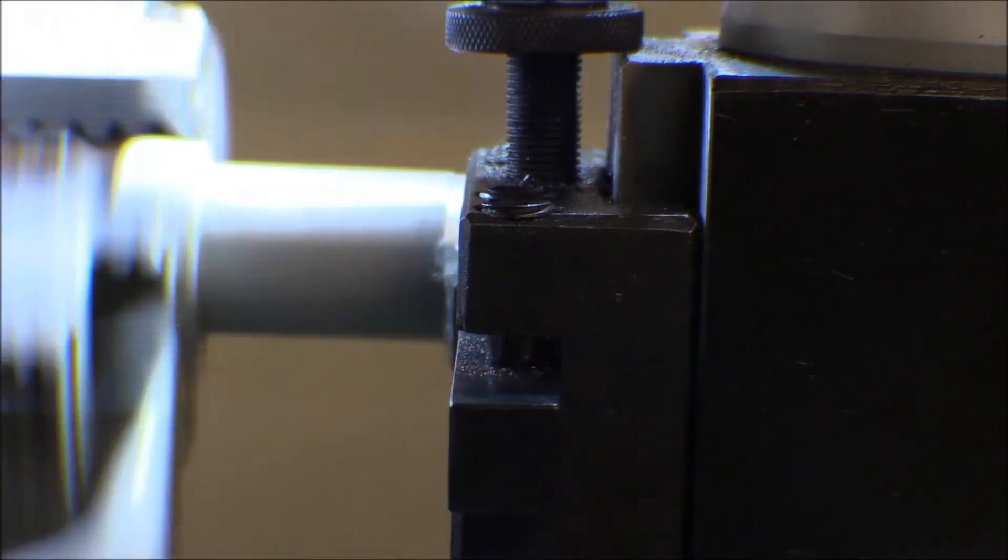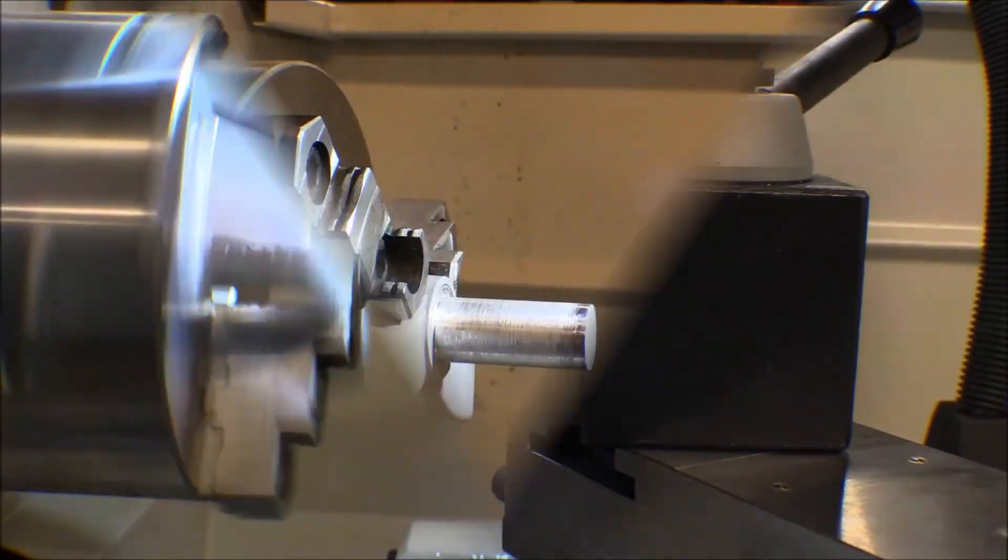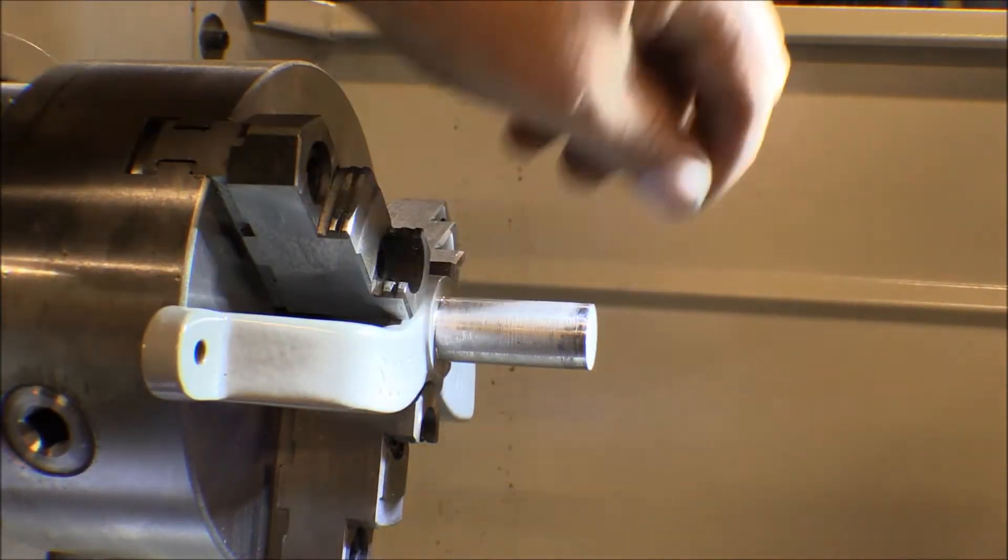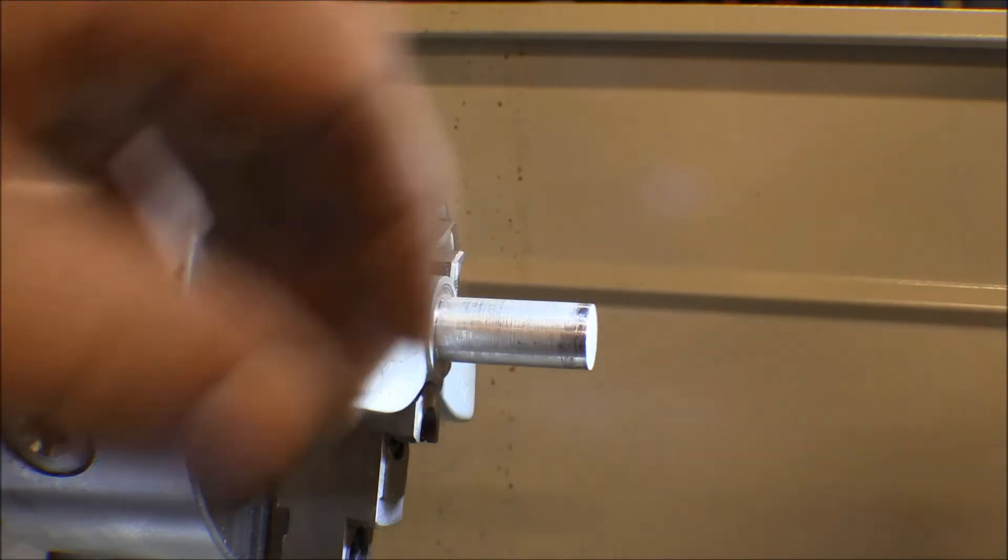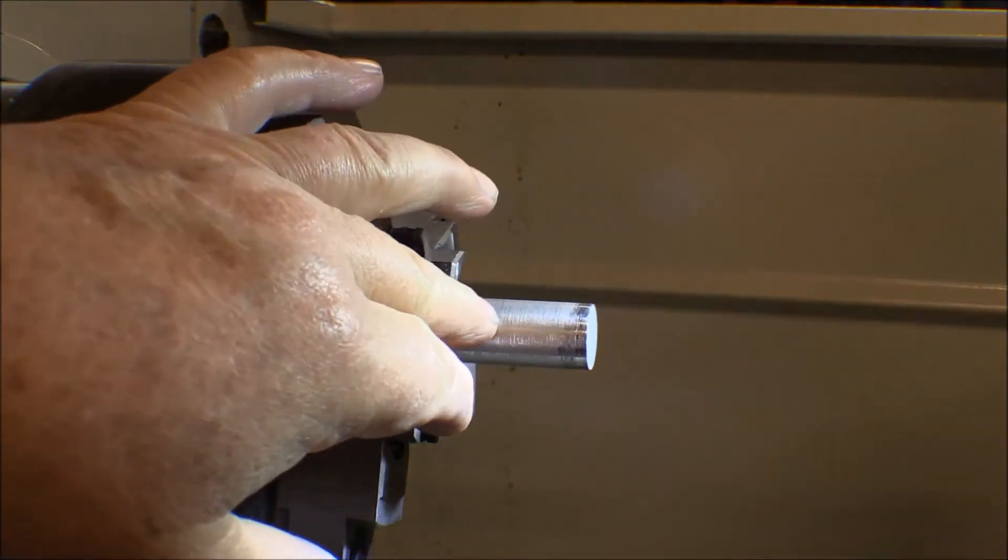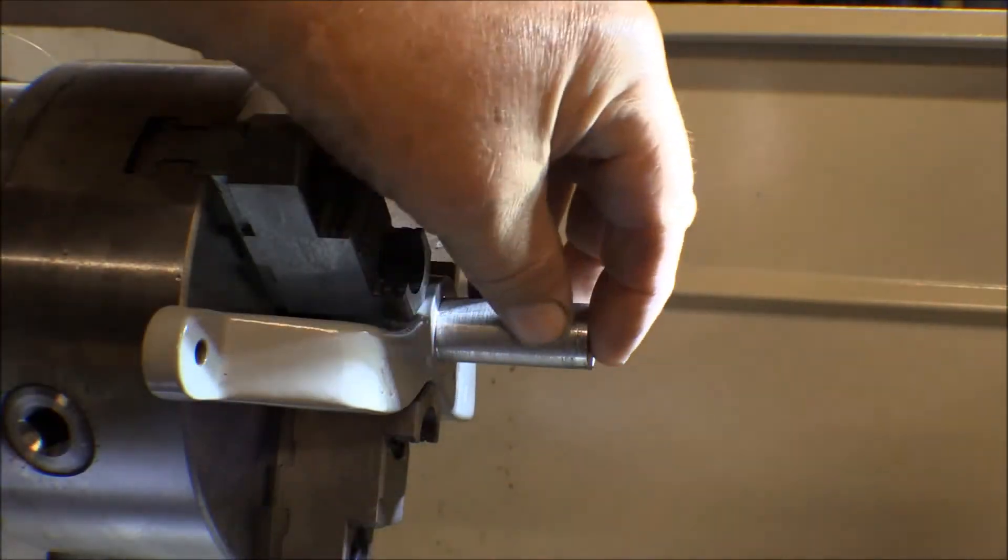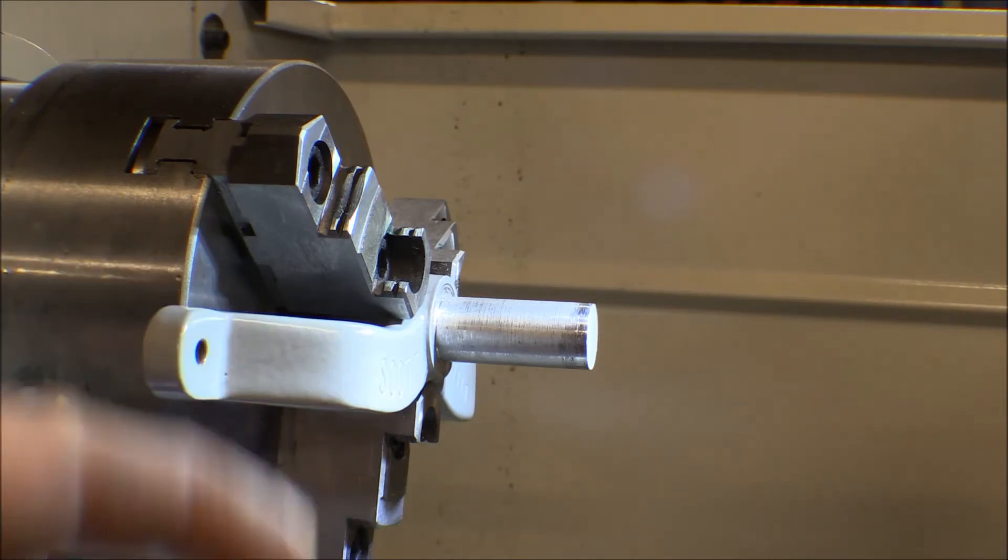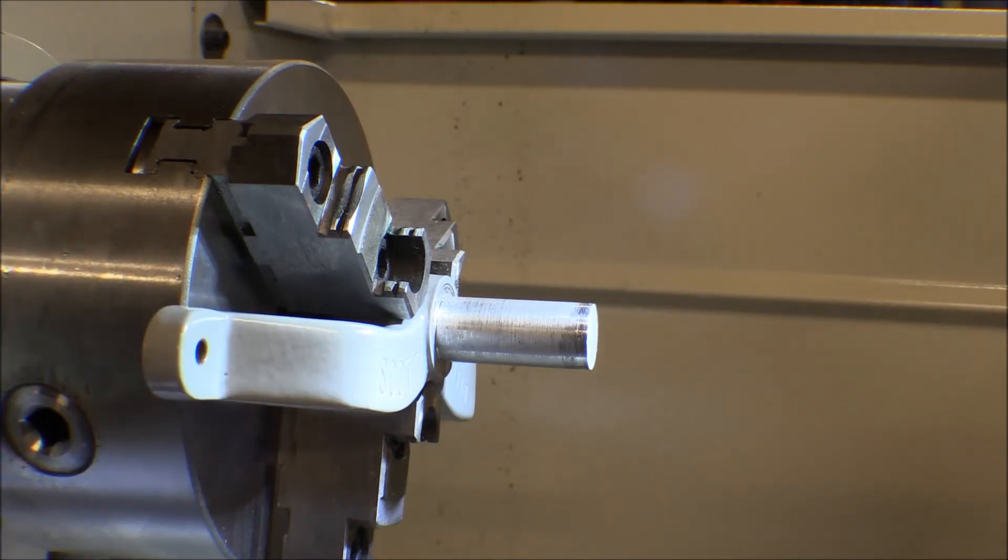I'm going to turn that down to where with the digital calipers it should be pretty close. So I took it off and tried it, and it'll just almost slip in there. What I'm going to do now is go ahead and take some sandpaper and just smooth that up again, take just a little bit off with the sandpaper. It's too close to try it with the lathe, especially with that carbide bit on there.